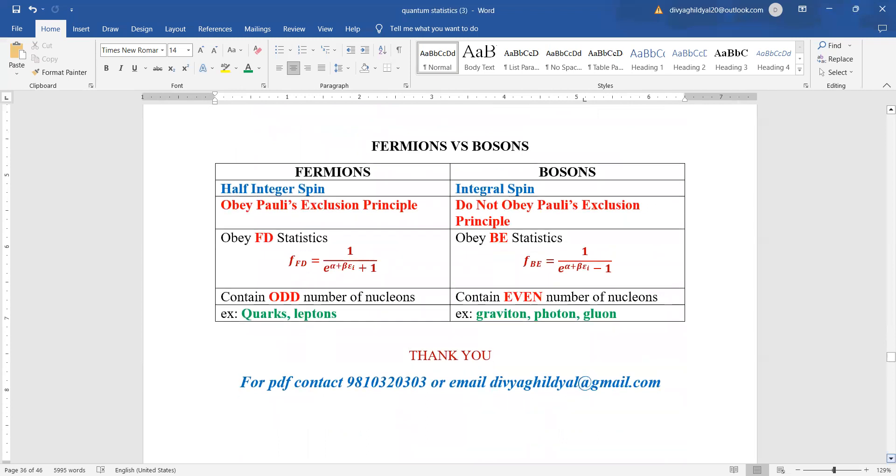Quickly, let us revise. Fermions have half-integral spin. Bosons have integral spin. Fermions obey Pauli's exclusion principle. Bosons do not obey Pauli's exclusion principle. The Fermi-Dirac statistics for fermions is Fd equal to 1 upon e to the power of alpha plus beta epsilon i plus 1, and in bosons minus 1.